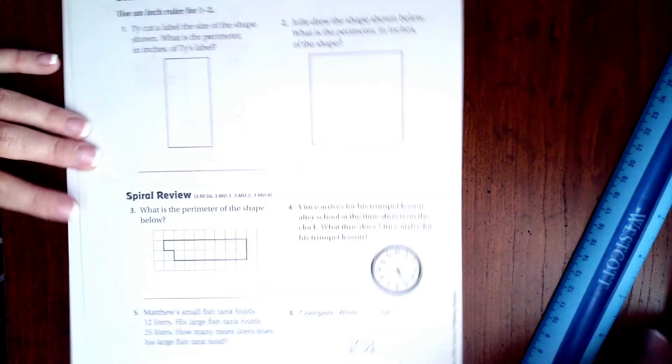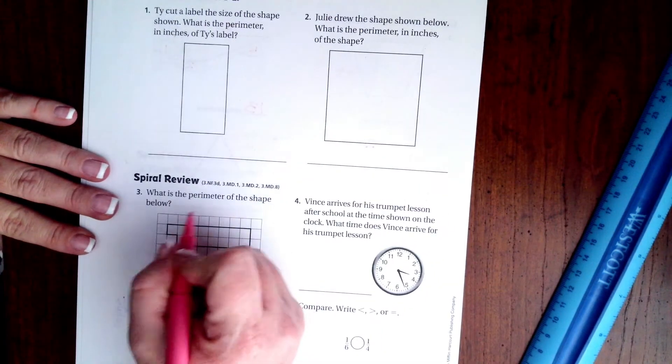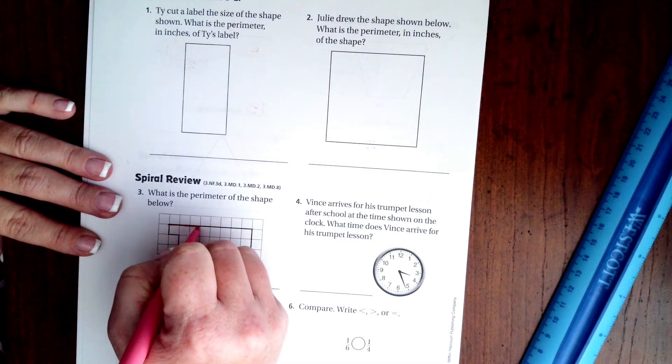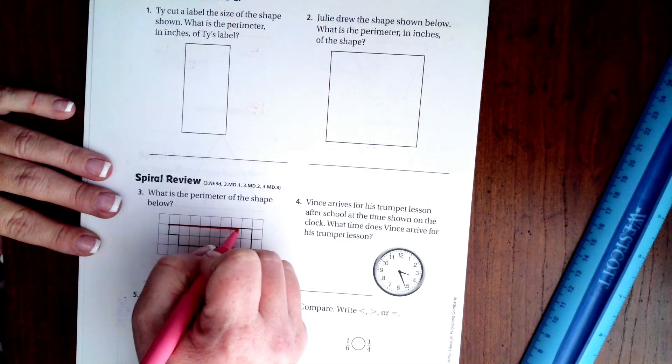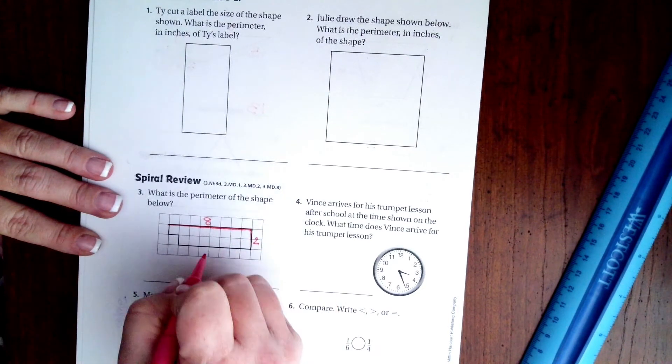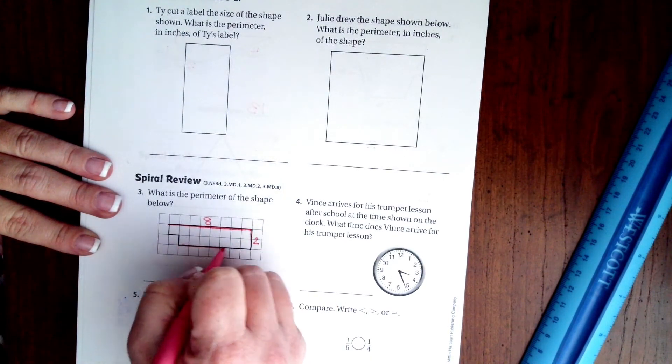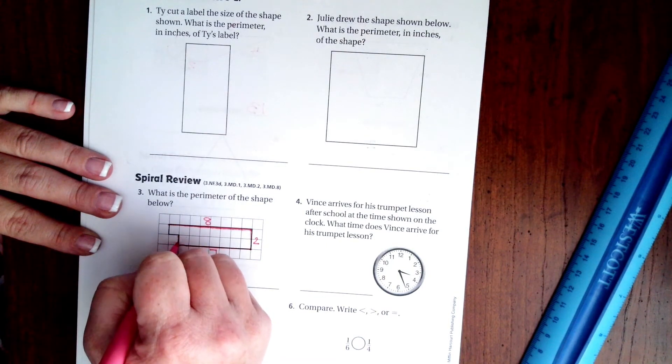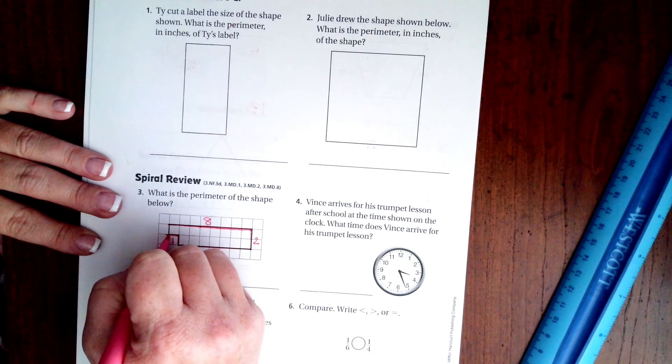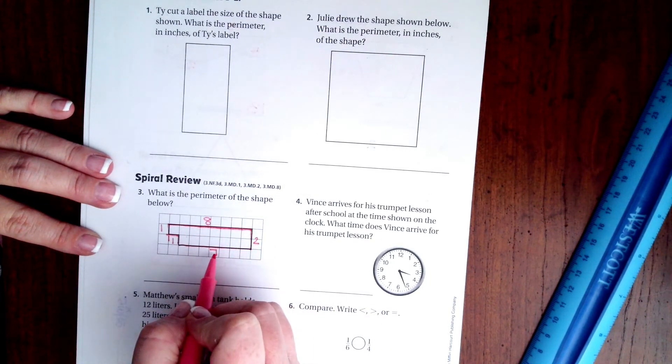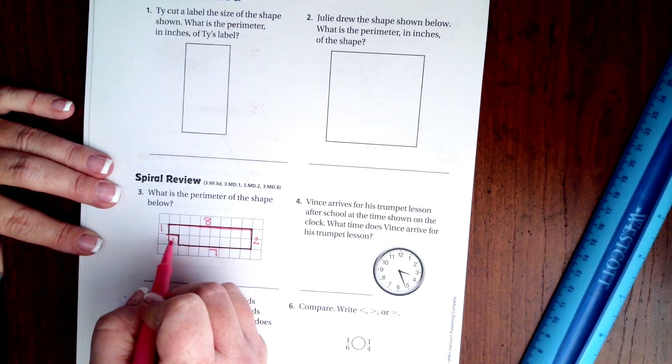Says what is the perimeter of the shape? Well, we're going to go one, two, three, four, five, six, seven, eight with two. And this is going to be one shorter than that eight, so it's going to be seven. Notice we're just one shorter, one, one, one. So we have eight plus two is ten, plus seven is seventeen, eighteen, nineteen, twenty. Twenty units, and we can put units because it doesn't give us a measurement.